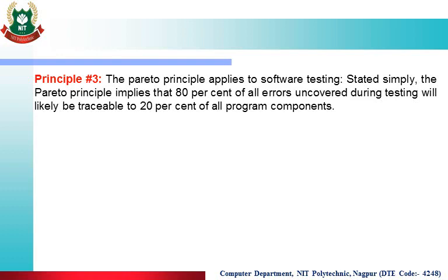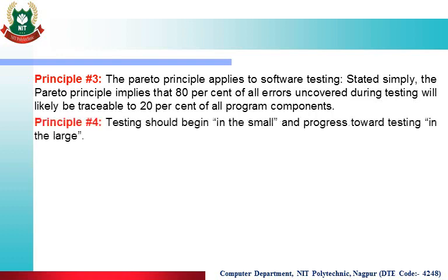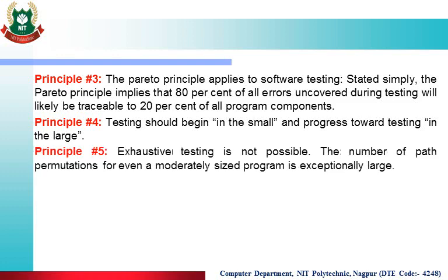The Pareto principle states that 80% of errors uncovered during testing will likely be traceable to 20% of all program components. This principle is suggested by Davis. The next principle: testing should begin in the small and progress towards the large — start from small and move to large. Finally, exhaustive testing is not possible; the number of path permutations for even a moderately sized program is exceptionally large.